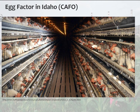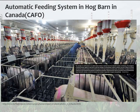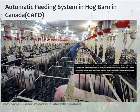This is an egg factory in Ohio. These chickens spend most of their lives, if not their whole lives, in this little pen — they're just there to lay eggs. This is an automatic feeding system in a hog barn in Canada. They do have things called gestation crates where animals really can't get out of their cage and spend their whole life in a little cage, which obviously is not something they would naturally do.